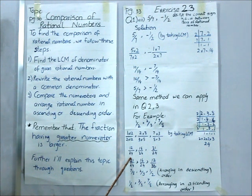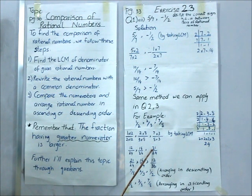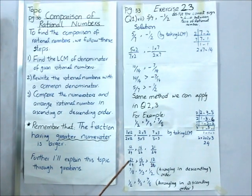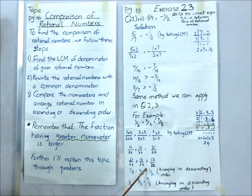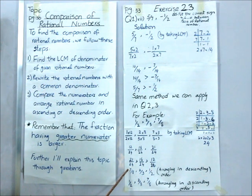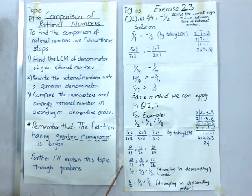As per the rule, a fraction having the greater numerator is considered bigger. So 21 is the greatest numerator, making that the largest fraction. Arranging in descending order: 21 by 24, 16 by 24, 12 by 24. Translating back to the original question — 7 by 8, then 2 by 3, then 1 by 2 — written in descending order.